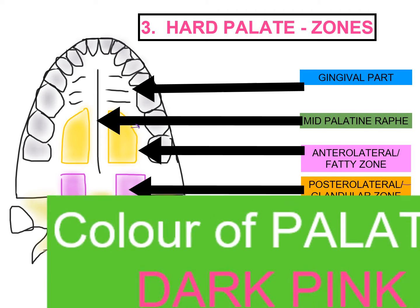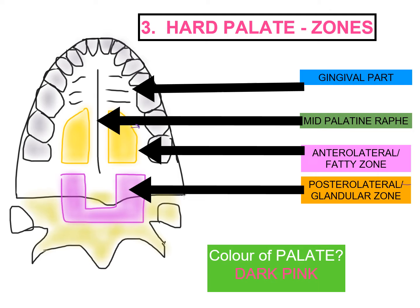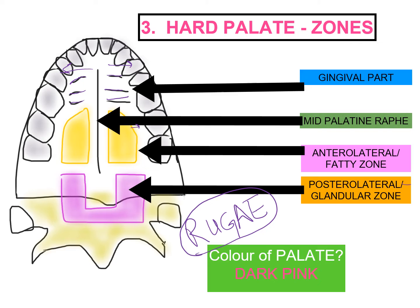The palatal mucosa appears dark pink in color. These are called palatine rugae. Their number, size, and shape vary from person to person.